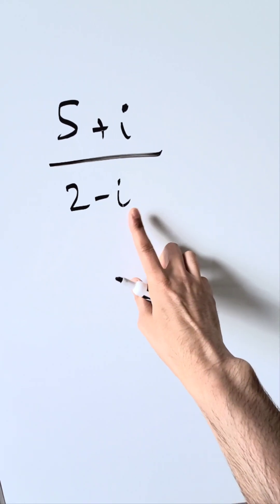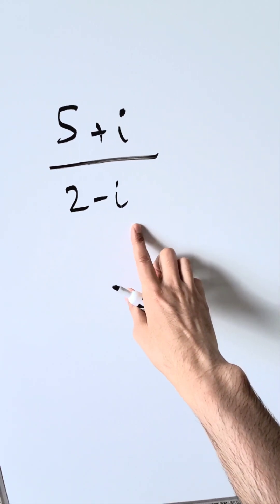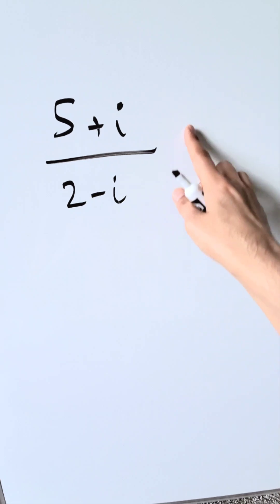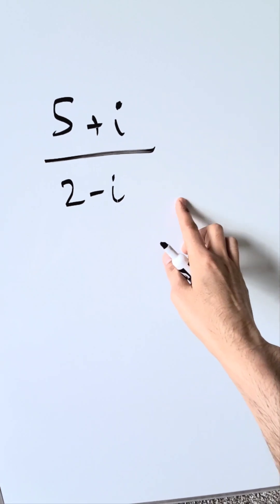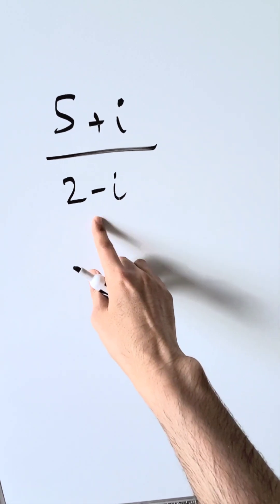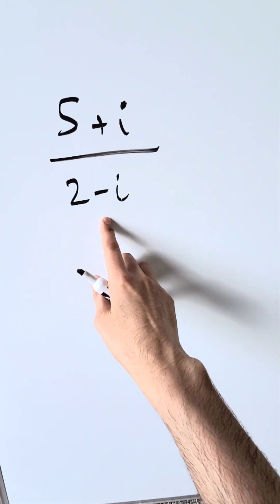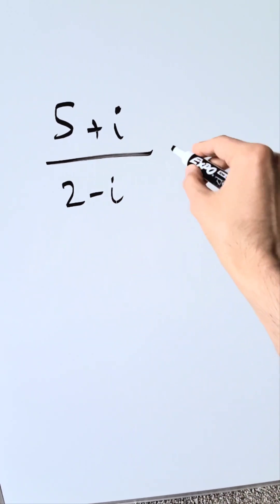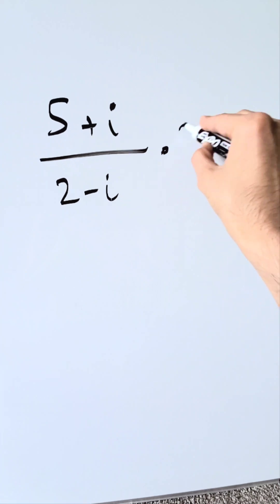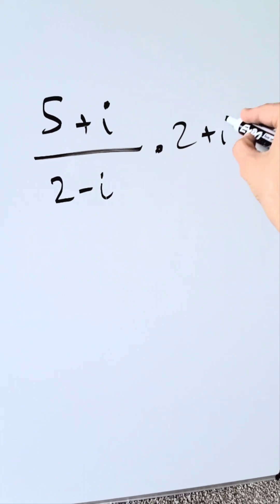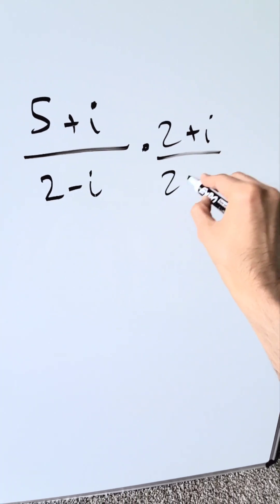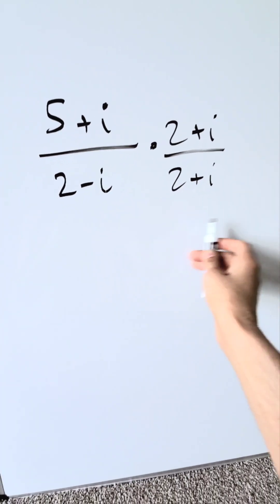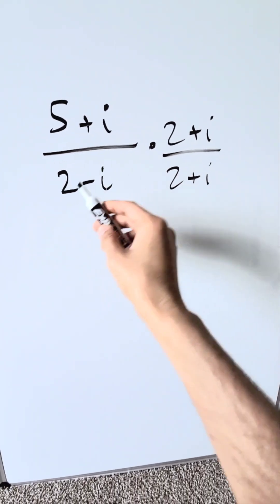You're going to evaluate this by rationalizing the denominator — multiplying the numerator and the denominator with the conjugate of this. We have 5 plus i divided by 2 minus i; we'll multiply by the conjugate, 2 plus i, both numerator and denominator, and carry this forward.